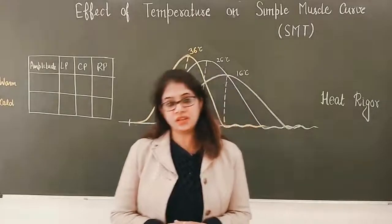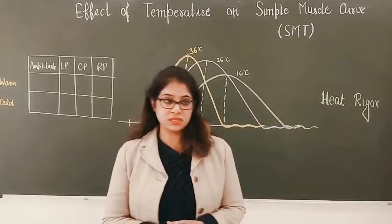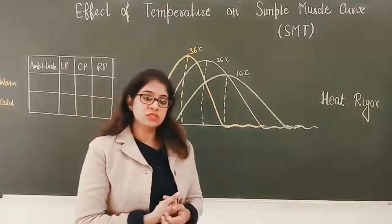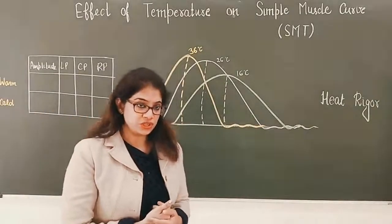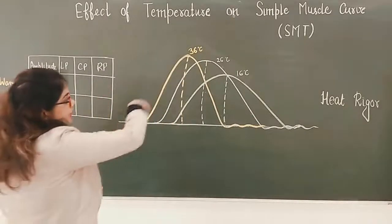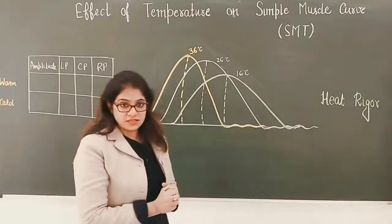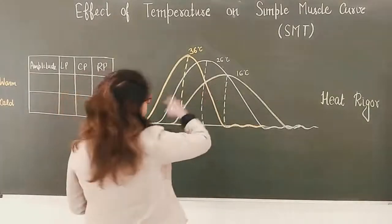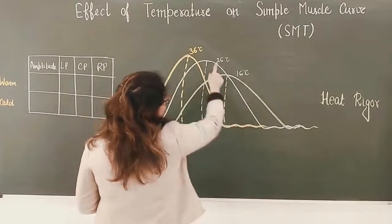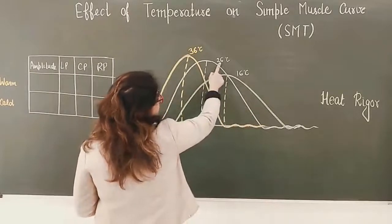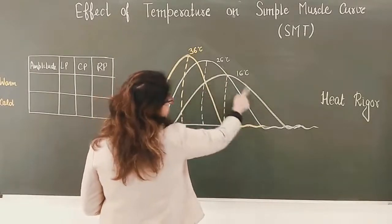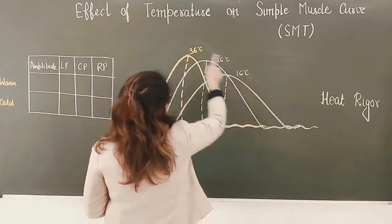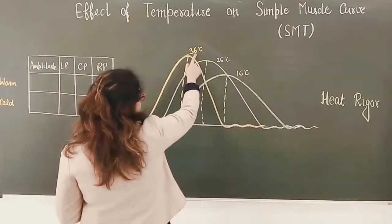The next graph you can get in your exams is the effect of temperature on a simple muscle curve or simple muscle twitch. You are going to get three graphs. Temperature is written on the axis. The first graph is at normal temperature, the green one is at cold temperature, and the third one is at warm temperature.